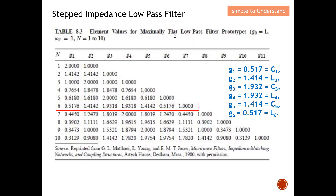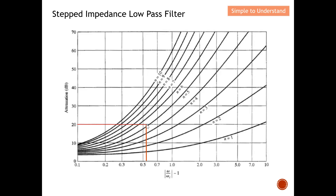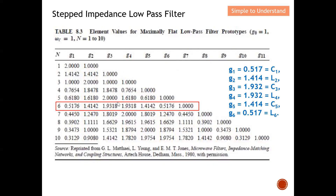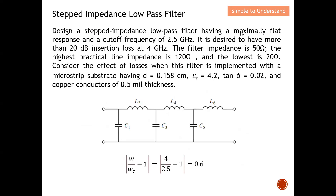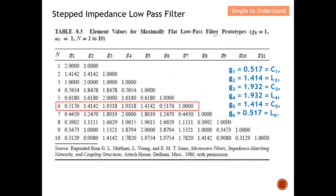Once n = 6 is determined, I refer to the maximally flat low pass filter prototype table. For n = 6, the g-terms are: g₁, g₂, g₃, g₄, g₅, g₆ (the final g₇ term corresponds to the 50 ohm termination resistor and can be omitted). These g-values are extracted from the maximally flat low pass filter prototype table since the question specifies a maximally flat response.